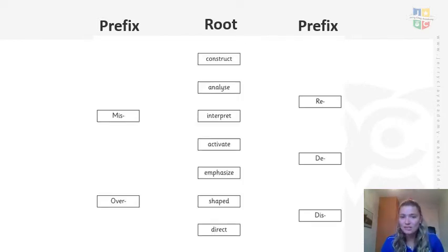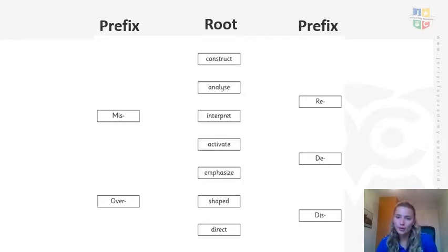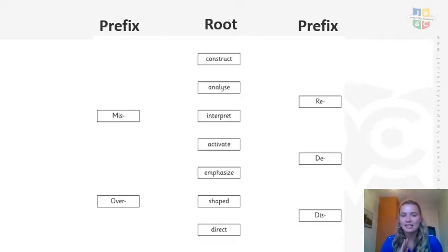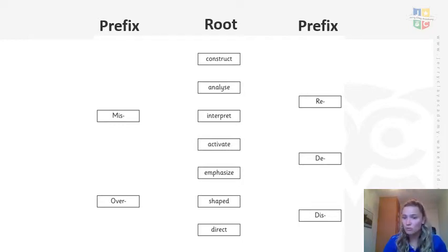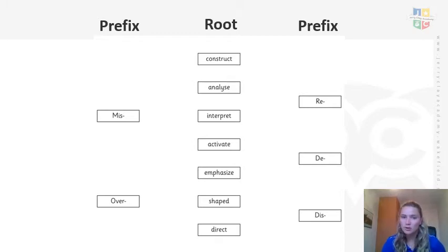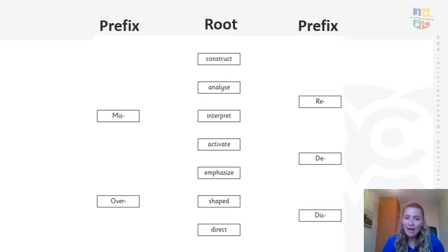So now we've got the same idea again. I'd now like you to copy down these — this time we've got different root words: construct, analyse, interpret, activate, emphasise, shape and direct. I'd like you to have a go doing the exact same thing with the prefixes mis, over, re, di and dis to see which root words go with which prefixes. Have a go — this is a bit more of a challenge, so it will be a little bit more challenging for you. And then we'll have a look to see if you've got them right. If there are words you don't already know, think about what they mean first and use the internet or dictionary.